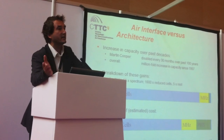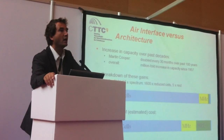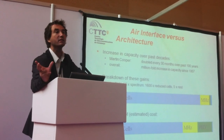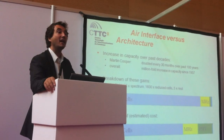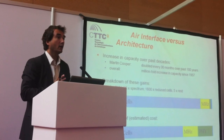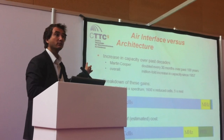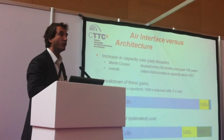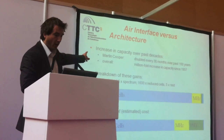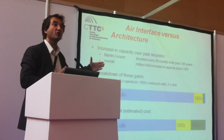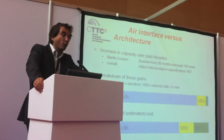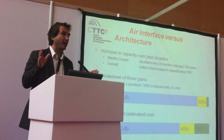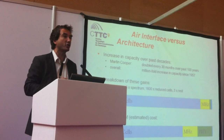The next question we embarked on is how do you best design your system? We looked at the past history of how capacity has evolved and understood that the majority of capacity gains came from making cells smaller — a factor of 1,600 out of a total million-fold increase over the past 30 to 40 years. 25 times came from spectrum, and 5 times from the improved physical layer. So we understood very quickly that we shouldn't focus too much on the physical layer. We should play a little with spectrum, but the main emphasis should be on the spatial distribution of the architecture.